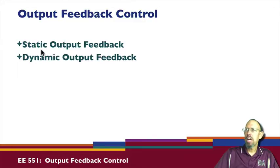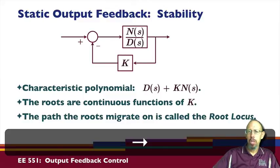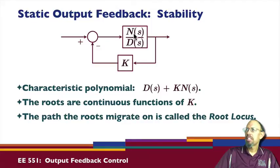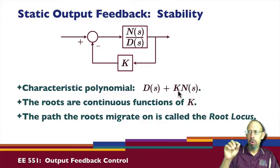In looking at output feedback control, we're going to look at what I call basic or static output feedback, then we're going to look at dynamic output feedback. In the static output feedback problem, we have a feedback gain and we may want to incorporate various properties by appropriate choice of k. Looking at stability, we have a closed loop system n over d, and the closed loop characteristic polynomial is d(s) plus k·n(s). The roots of the system are linear in k and a continuous function of k.